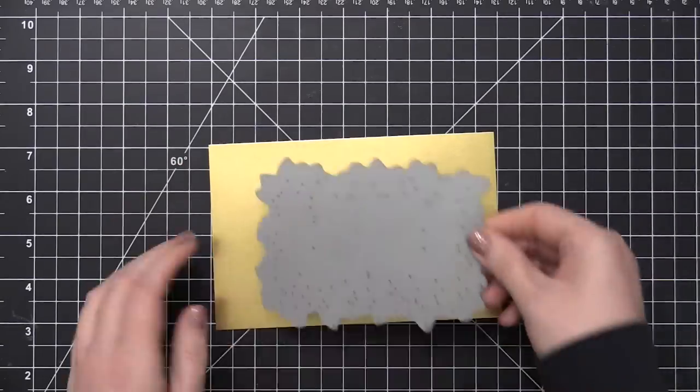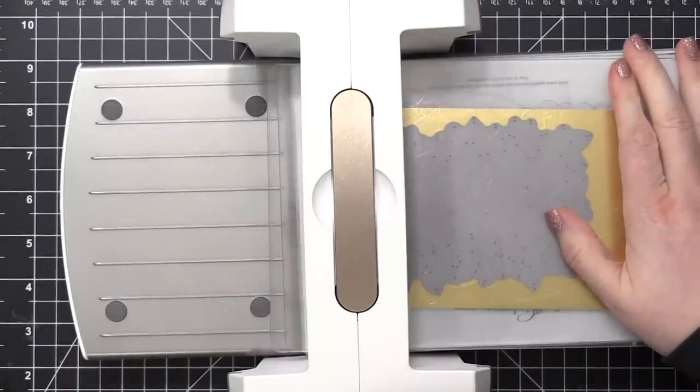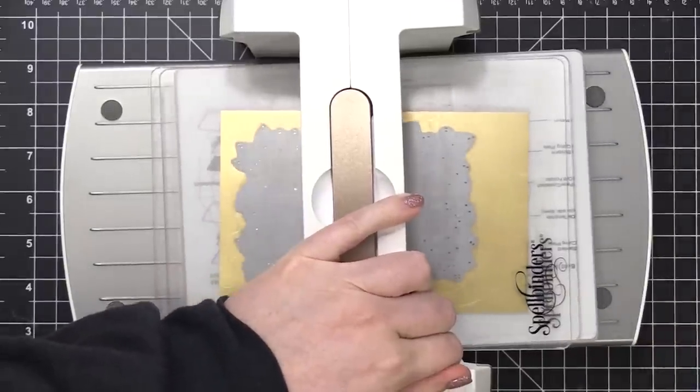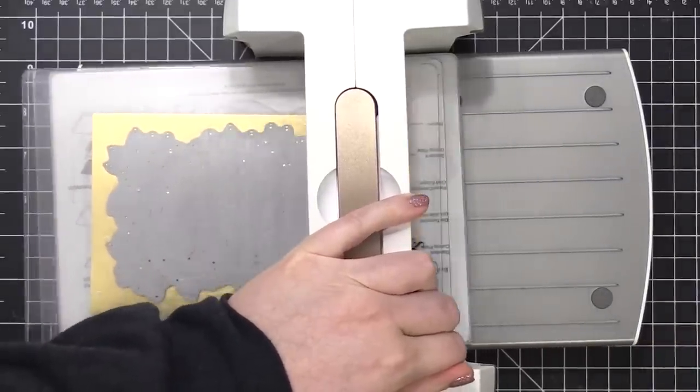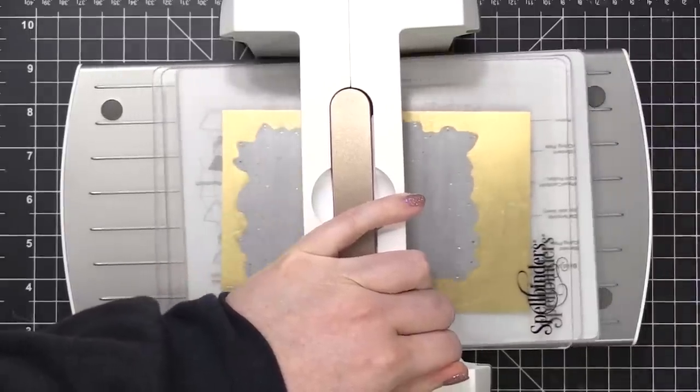So I'm gonna be cutting this gold foil cardstock with my die cutting machine. I'm gonna run it through, and I'm actually going to run this through three times, because this gold foil cardstock is rather thick, and I wanna make sure I get a really clean cut.